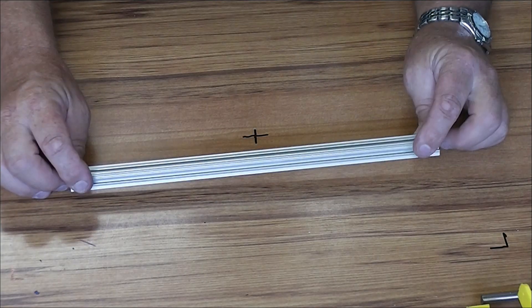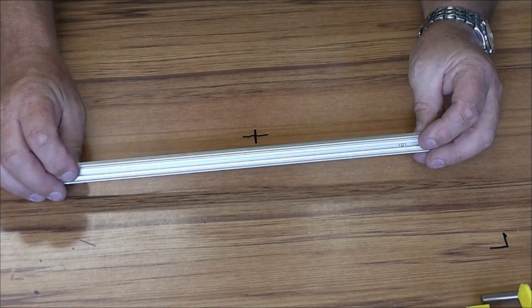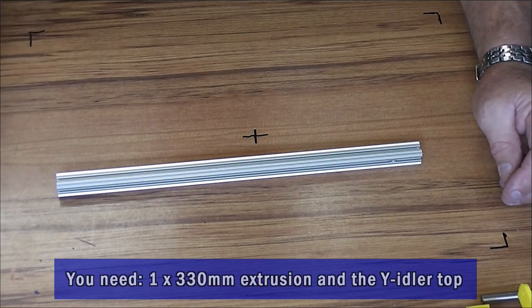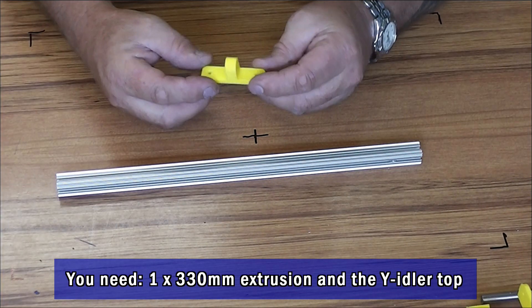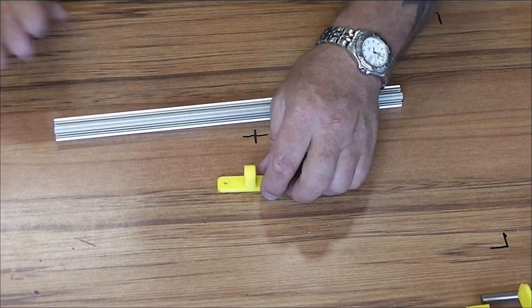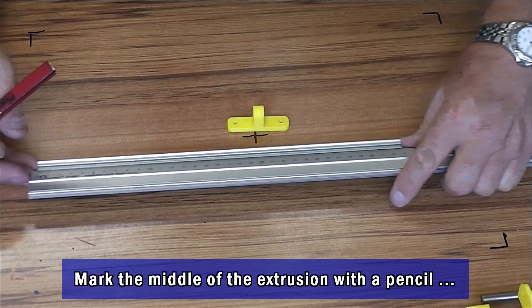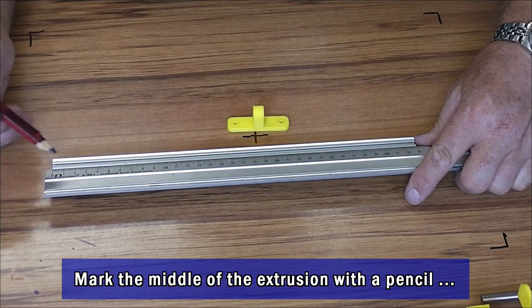First thing we're going to do is make up each of the ends, so we make up the end with the Y idler on it first. We need a 330mm extrusion. We need the top part of the Y idler and that gets mounted in the middle, so we'll mark the middle of this rod.